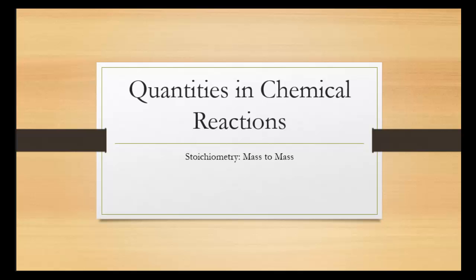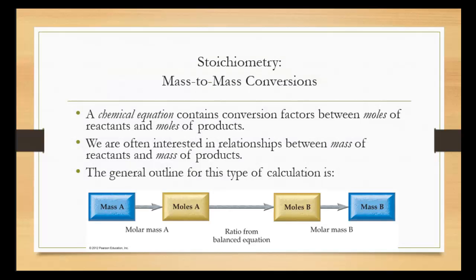In this tutorial, we will be discussing how to use stoichiometry to go from mass of one compound to mass of another. A chemical equation contains conversion factors between moles of reactants to moles of products. Notice that the word moles is emphasized — in order to go from one compound to another, you have to have it in moles first.